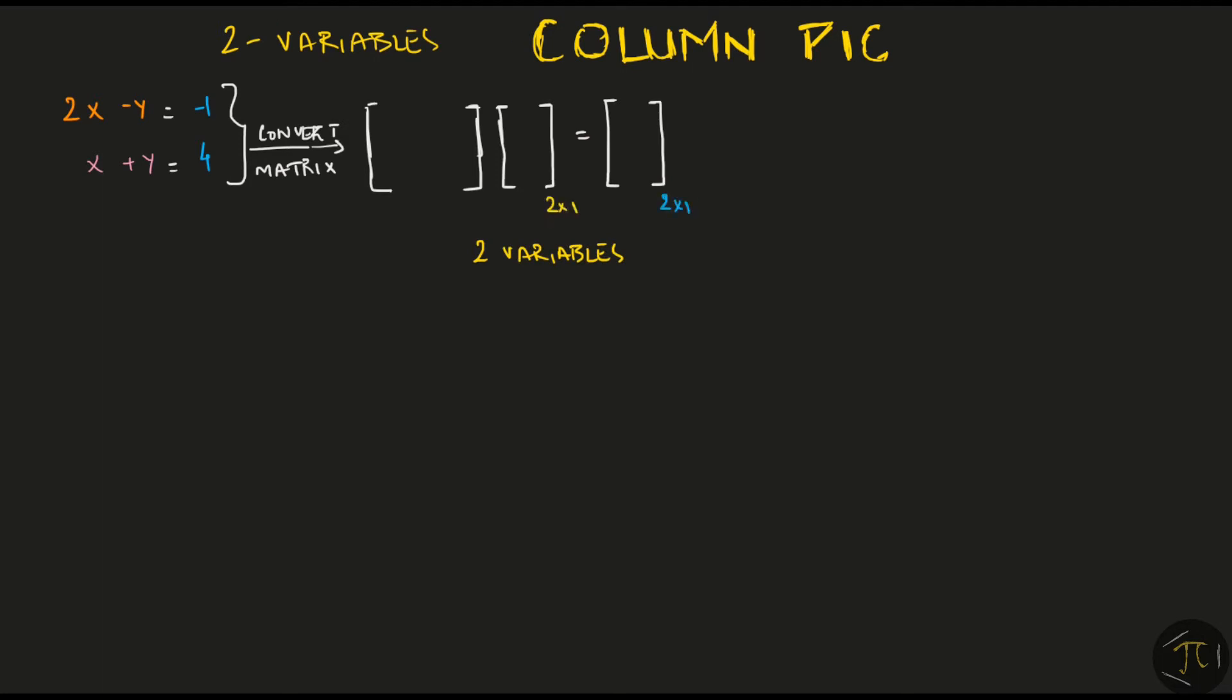Now, since I know I have two variables, my column vectors must be 2 by 1 and because I have two equations, my matrix should have two rows. Check out my previous videos to learn more about converting equations to matrix notation. Remember that a matrix vector multiplication is defined such that it is equivalent to taking a linear combination of the columns of the matrix.